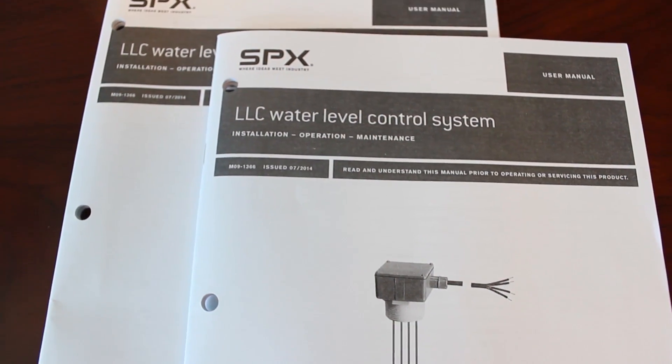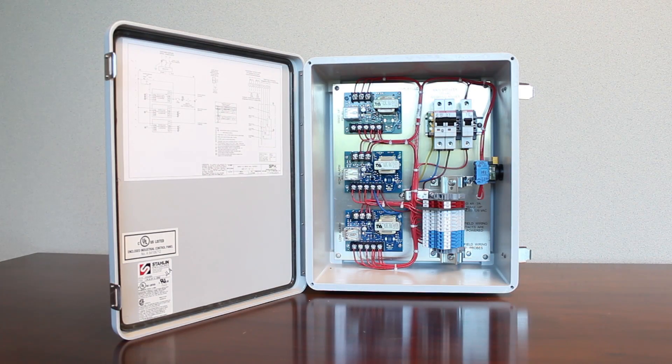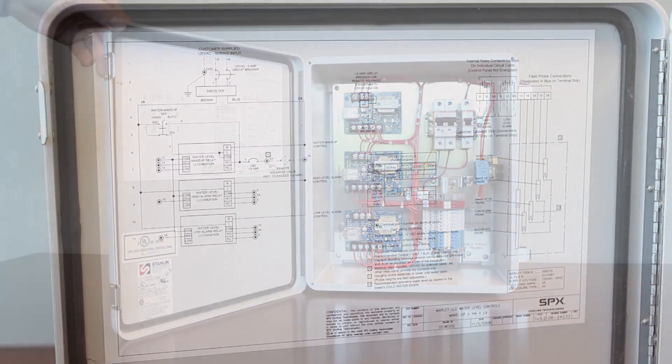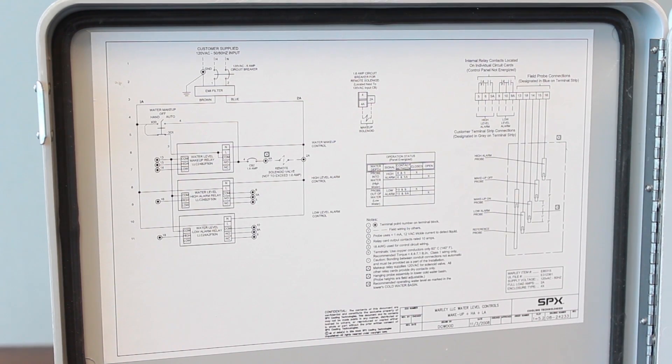With the panel are shipped two user manuals. We're going to look at the inside of the control box and point out the various components. First of all we put a real nice wiring diagram in here for the field electrician to follow when he's wiring the panel.